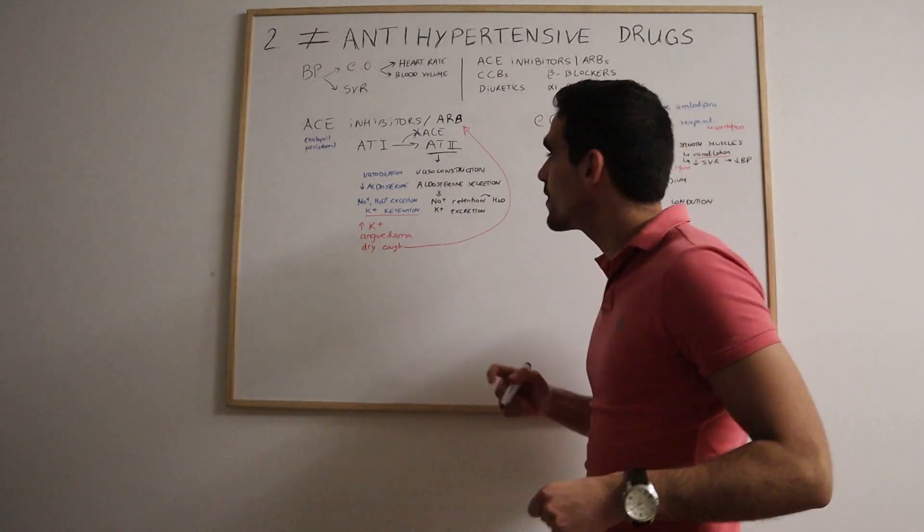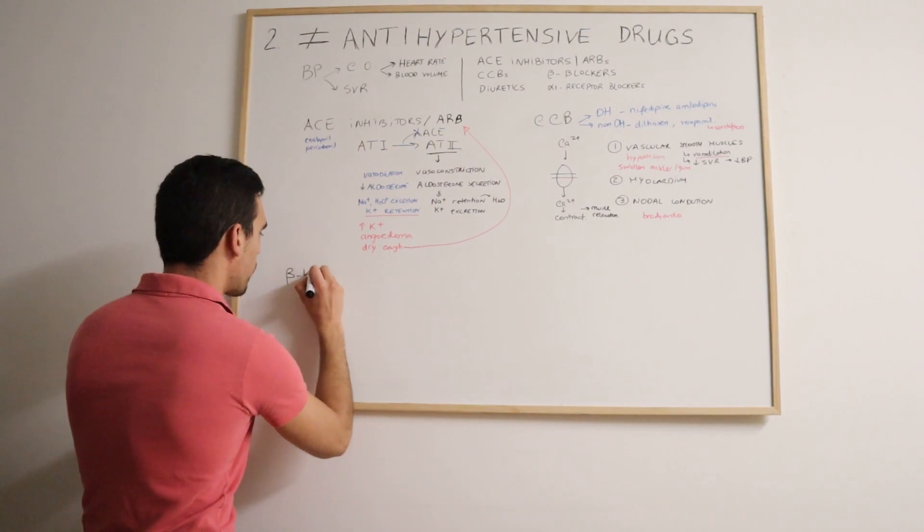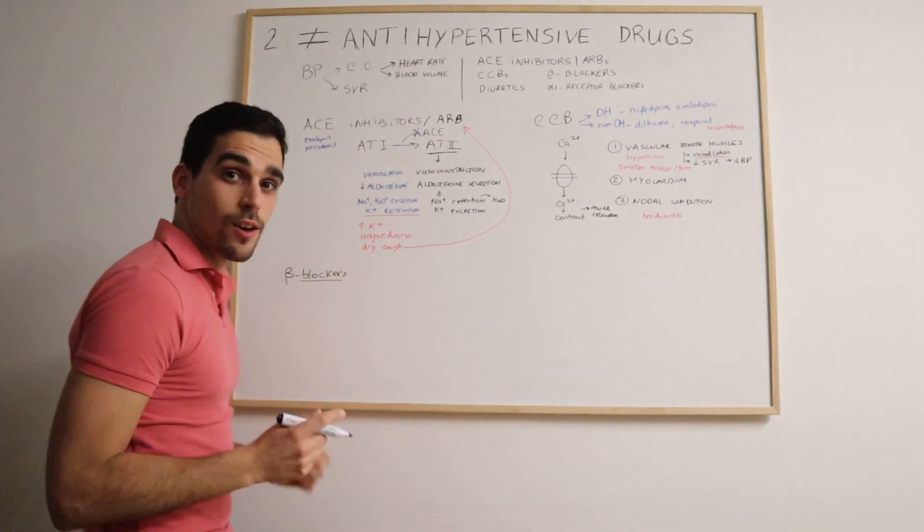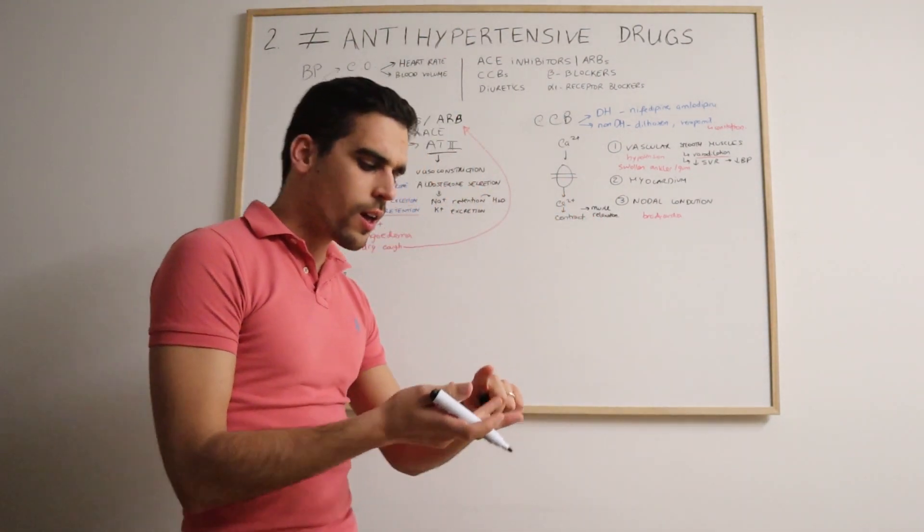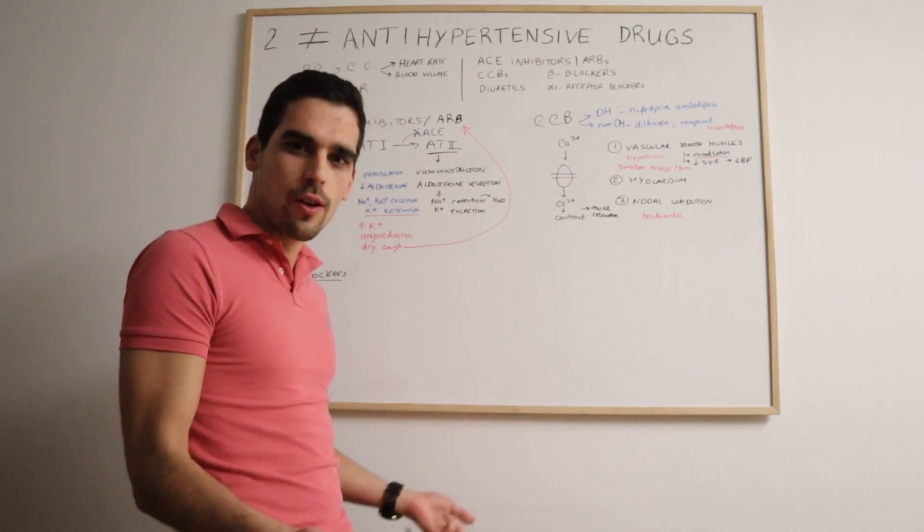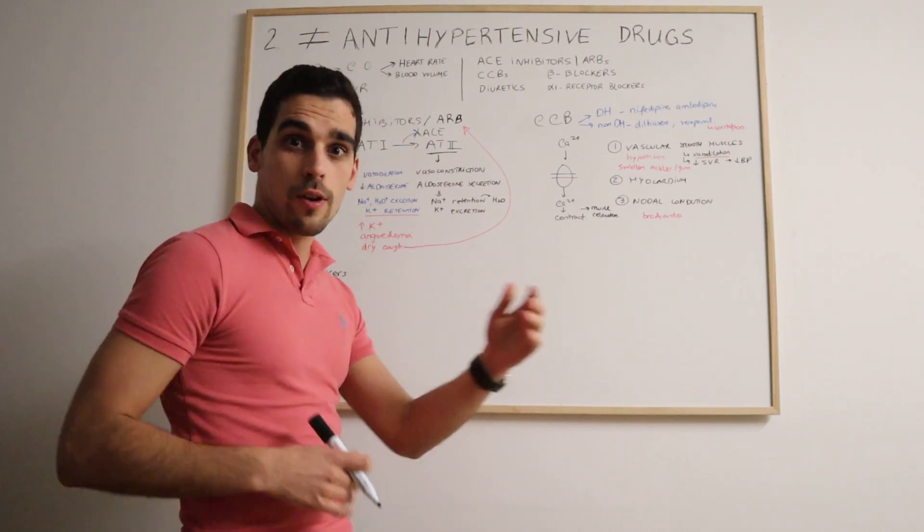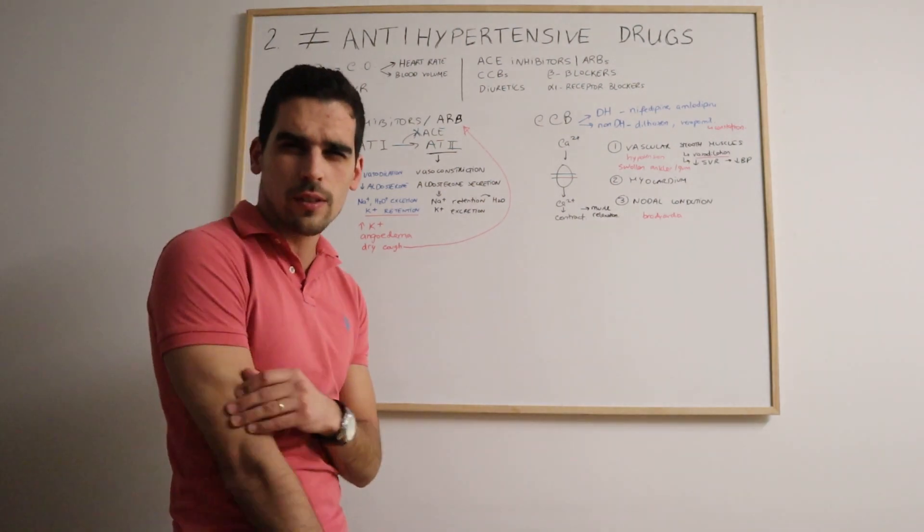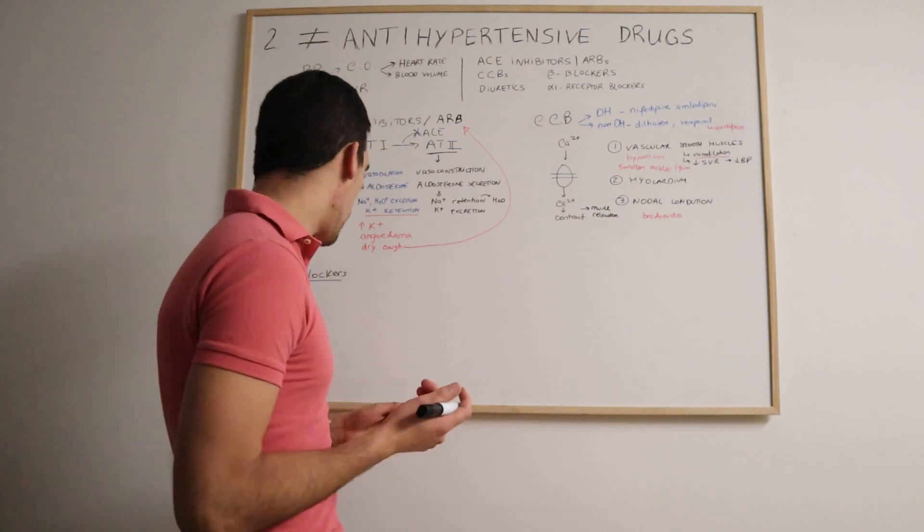Then the next class is the beta blockers. There are many types of beta blockers. We've got atenolol, bisoprolol, carvedilol, nadolol, sotalol. There are many drugs which are the beta blockers, but before I explain the difference between them, it's very important to understand physiologically some concepts.